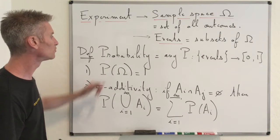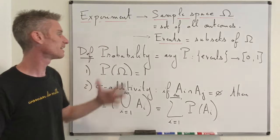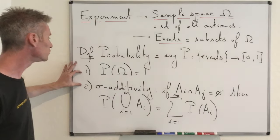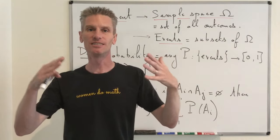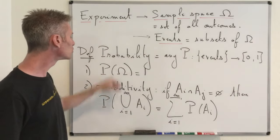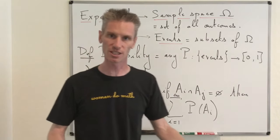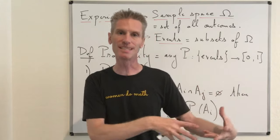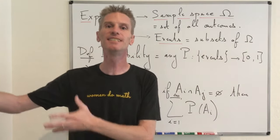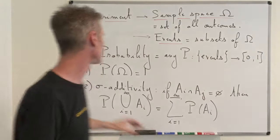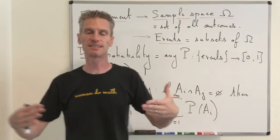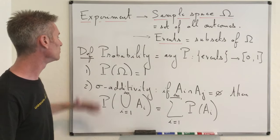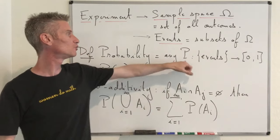Why choose just those two axioms to define a probability? Because from axioms one and two, you can in fact deduce everything you wish a probability to satisfy. For instance, you can prove that P(∅) = 0, and that P(complement of A) = 1 − P(A), which says the probability that something does not occur equals one minus the probability that it occurs. All the properties that intuitively should be true for P can be deduced from just those two axioms — that's why we use them to define a probability.